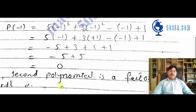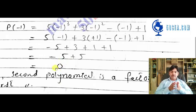Now, after substitution, if the answer is zero, it means that the second polynomial is a factor of the first polynomial.